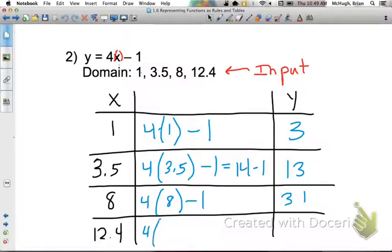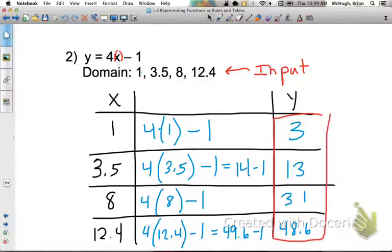And then the last one, if we input 12.4 in for x, 4 times 12.4 is going to get us 49.6. And then if we subtract 1, the output is 48.6. And then again, just like we saw in the last example, this collection of output values that we just came up with, we're going to call that our range for this function rule with the given domain.